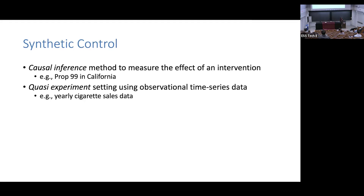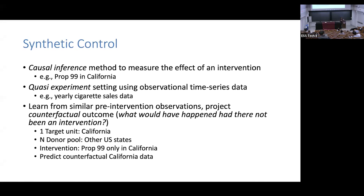For example, there's Proposition 99 in California regulating cigarette sales and required packaging information, and we want to know how much this affected outcomes. We learn from pre-intervention observations and project a counterfactual outcome — because you cannot collect data on what the outcome would have been if you hadn't enacted a law. This becomes important for drug trials where things are potentially life-threatening and it's no longer ethical to give a placebo, so instead you use this quasi-experiment framework.